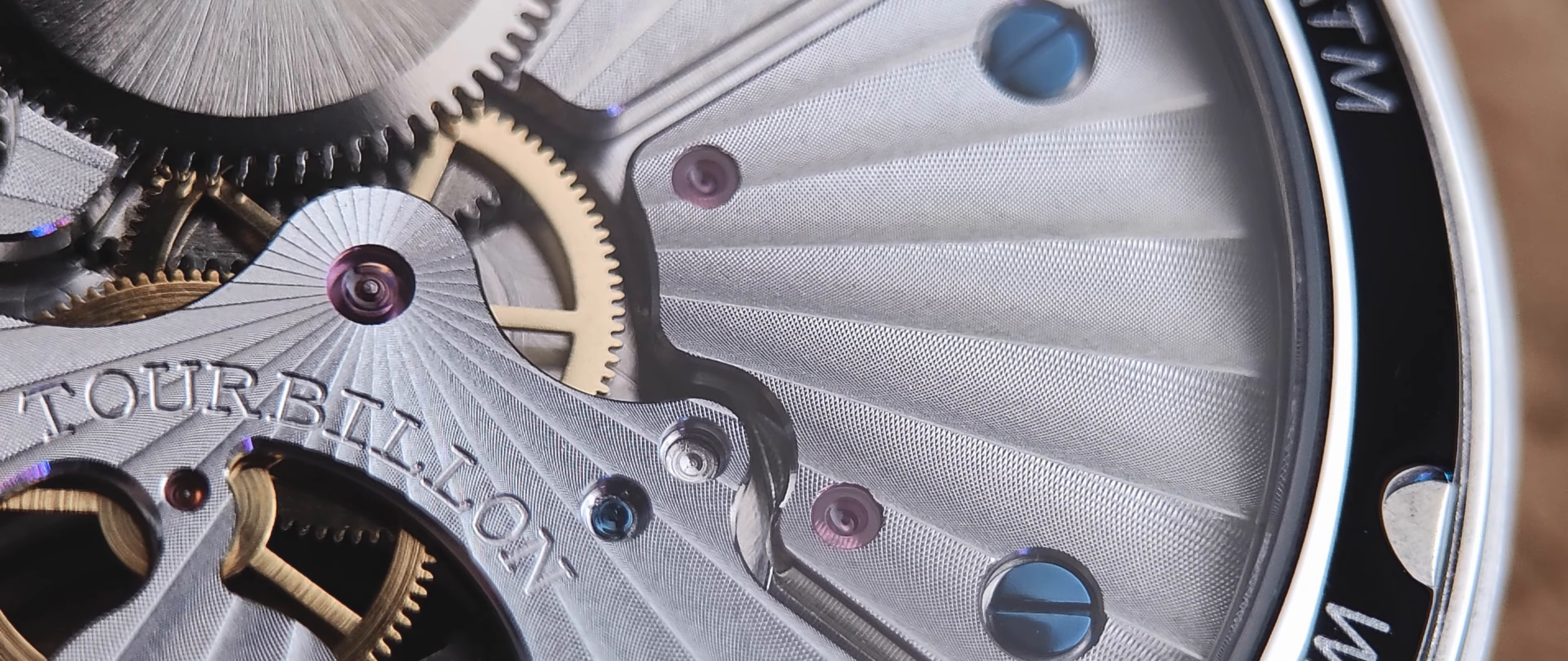The ST8230 ticks away at 21,600 beats per hour and gives me an error of less than 5 seconds a day, and from what I've seen, this is the common number across many of the other Seagull tourbillons, which is a great bonus if you care about the precision accuracy of your watch. The tourbillon fitted Seagull movement also features a decent 2.5 day power reserve of 60 hours.